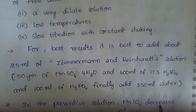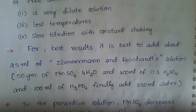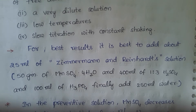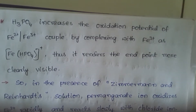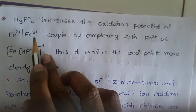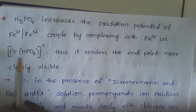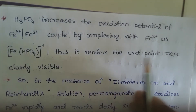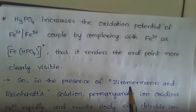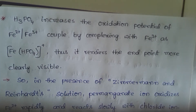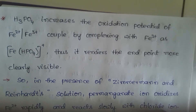In the Zimmermann-Reinhardt preventive solution, MnSO4 decreases the reduction potential of the Mn(VII)/Mn(II) couple, whereas H3PO4 increases the oxidation potential of the Fe(II)/Fe(III) couple by complexing with Fe(III). This renders the endpoint more clearly visible. In the presence of Zimmermann-Reinhardt solution, permanganate ion oxidizes Fe(II) rapidly and reacts slowly with chloride ion, thereby preventing chloride interference.